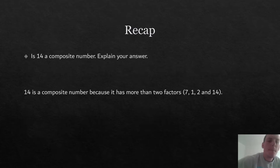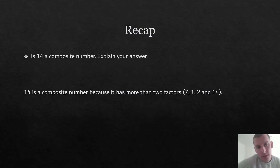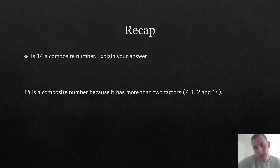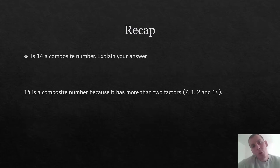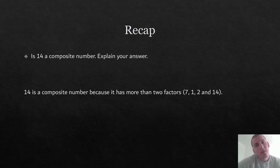So, is 14 a composite number? Yes, 14 is a composite number because it has more than two factors. Remember, a composite number is a number which has more than two factors. The factors of 14 are 1, 2, 7, and 14 — so it has four factors, and therefore it is a composite number. If you didn't quite get that right, maybe do a little recap session with yourself, your carer, your parent, or your siblings — all about composite and prime numbers.